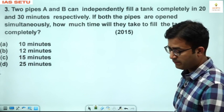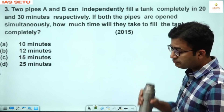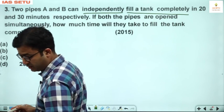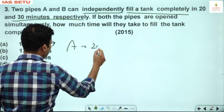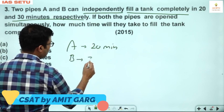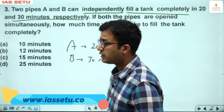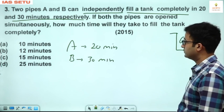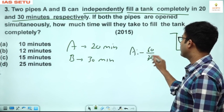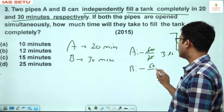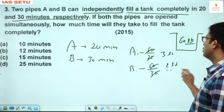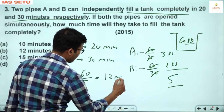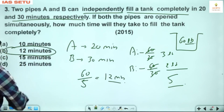Next is question number 3. Two pipes A and B independently fill a tank completely in 20 and 30 minutes respectively. We use the LCM concept — LCM of 20 and 30 is 60, so assume capacity of tank is 60 liters. A can fill 3 liters per minute, B can fill 2 liters per minute. Together they fill 5 liters per minute. So to fill 60 liters at 5 liters per minute, the answer is 12 minutes. Question number 3 answer is B — 12 minutes.